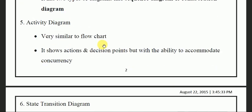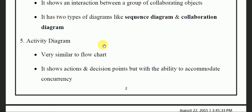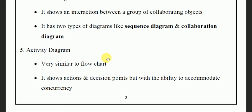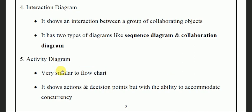Activity diagram is very similar to flowcharts, which you will have studied in basic programming languages like C. A flowchart is a diagram that represents flow, and in the same way the activity diagram represents that flow. Activity diagram shows actions and decision points, but with the ability to accommodate concurrency — showing concurrent actions and decisions in a particular system.